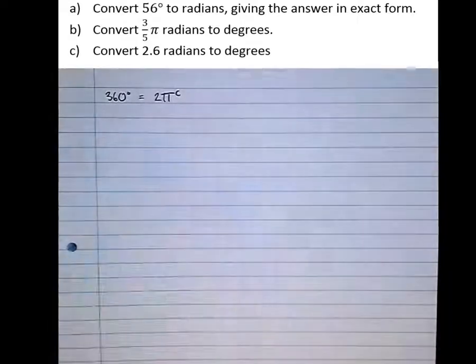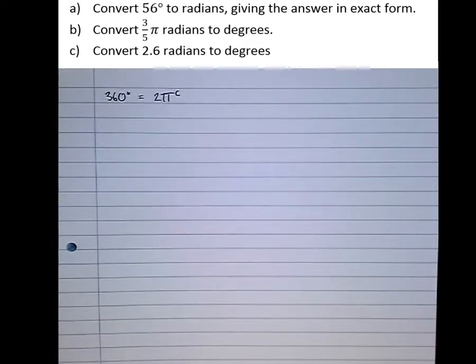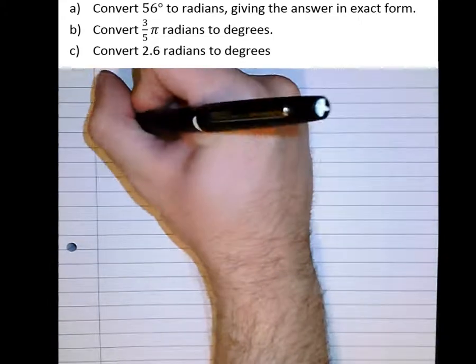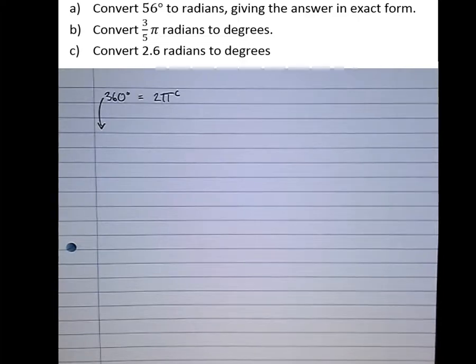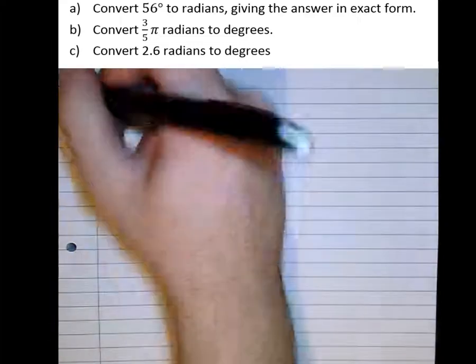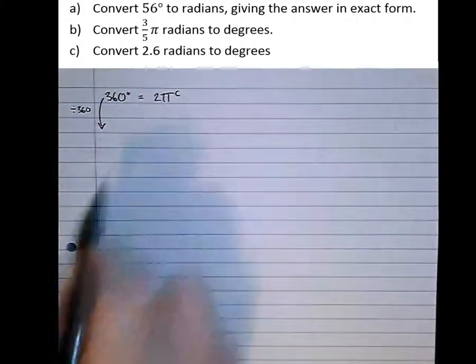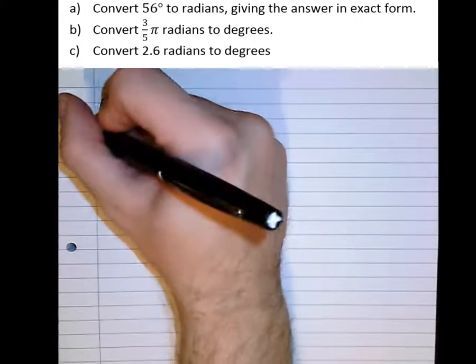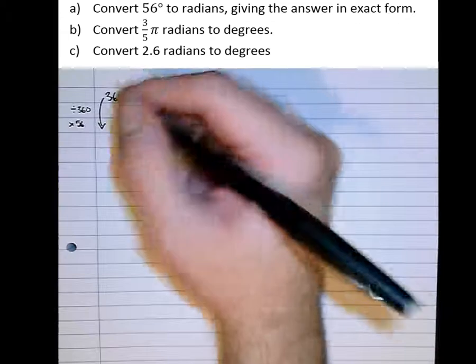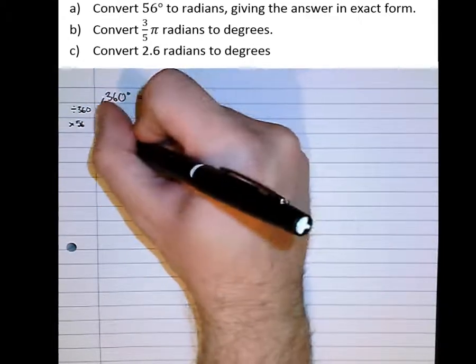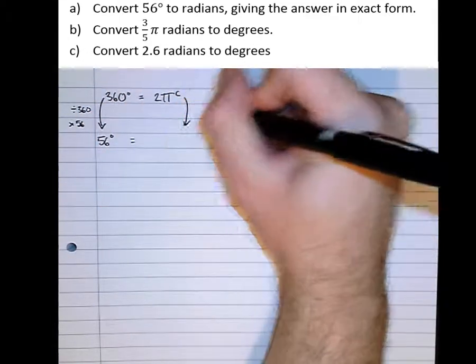The little c there stands for radians. So we want to turn this here into 56 degrees. So if 360 degrees equals 2π radians, to get 1 degree we can divide by 360, that gets us down to 1 degree. Then scale it back up to 56 degrees to get 56 degrees there.